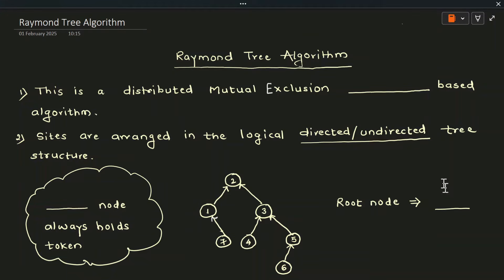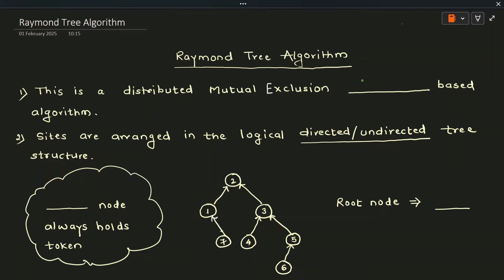Welcome to this session on Raymond's algorithm. Raymond's algorithm is a distributed mutual exclusion token-based algorithm. In a distributed environment, shared resources need to be accessed by multiple sites. If all sites access shared memory concurrently, data integrity may be lost. To prevent this, the mutual exclusion principle is used: only one site executes the critical section while others wait. The site holding the token enters the critical section — that is the basic principle of Raymond's algorithm.